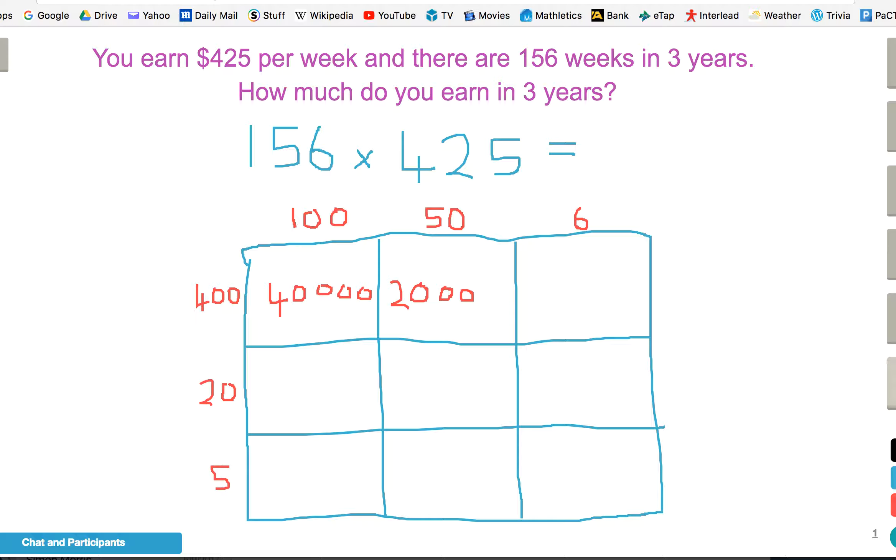So we move to the right 1, 2, 3 decimal places. 4 sixes are 24, and we extend by two places: 2,400.